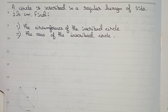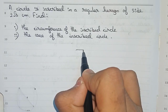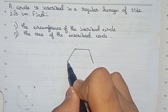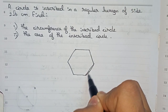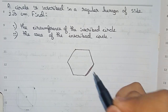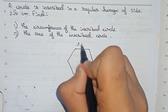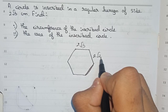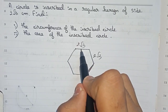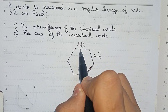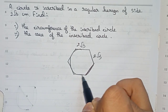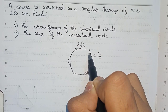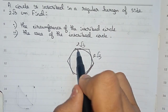To solve this, first let's draw a diagram of this question. So this is our hexagon. In this hexagon, all the sides are equal, so all the sides are 2 root 3. In this hexagon, a circle is inscribed, so the inscribed circle will look like this.